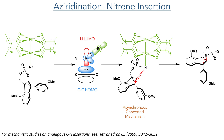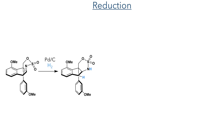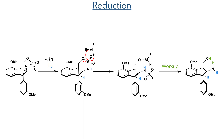Overall, this reaction inserts nitrogen into the carbon-carbon double bond and forms the aziridine. Reduction with hydrogen gas and palladium on carbon opened this aziridine ring to form the cyclic sulfonamide. Further reduction with aluminium hydride reduced this sulfonamide and, upon workup, ultimately yielded the desired 1,3-amino-alcohol fragment.